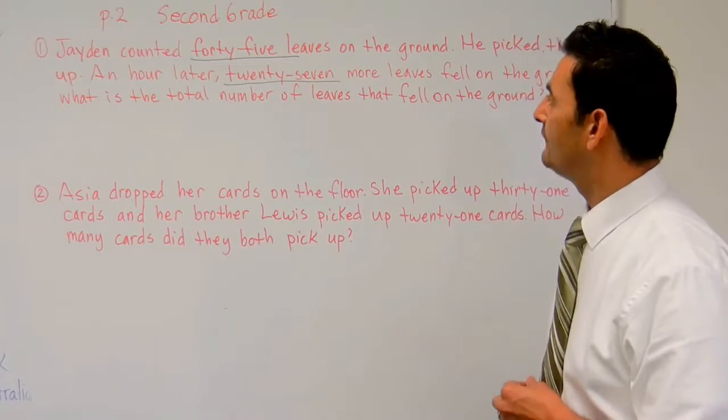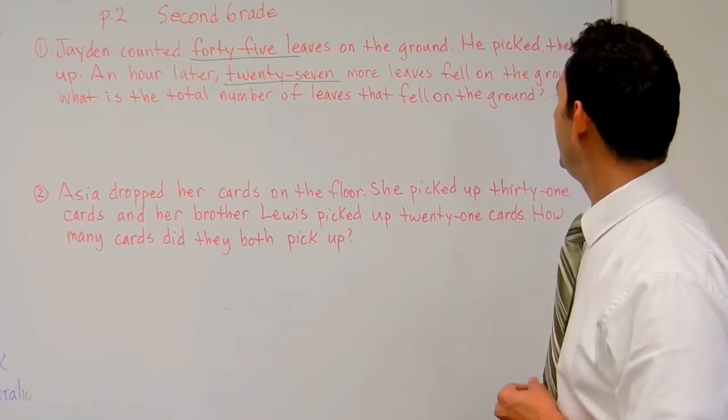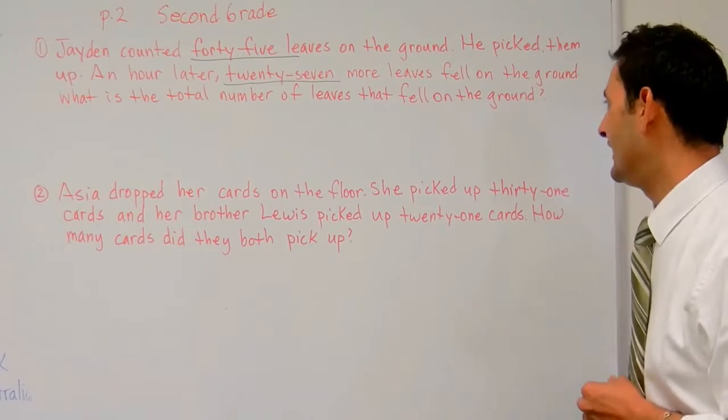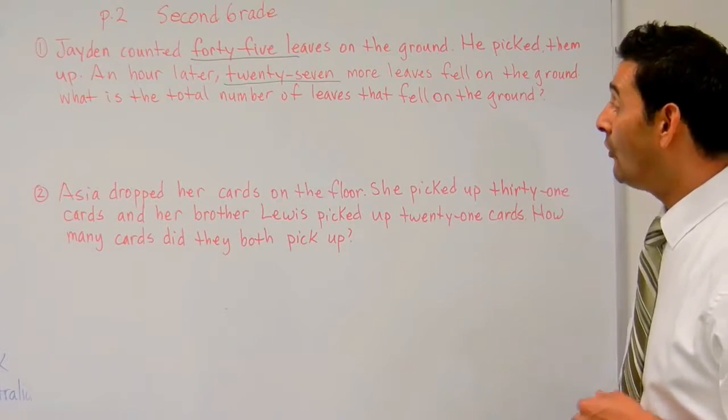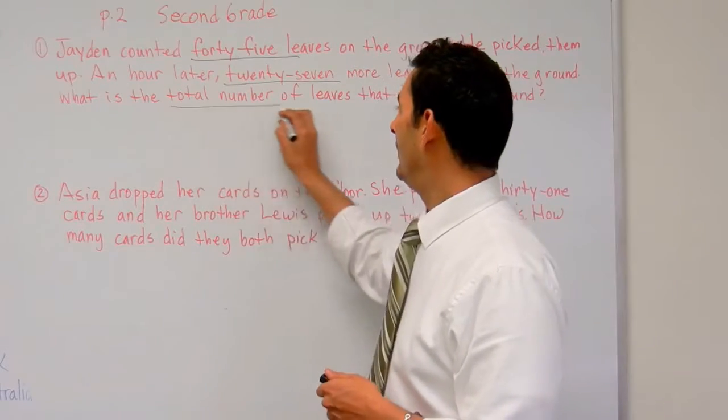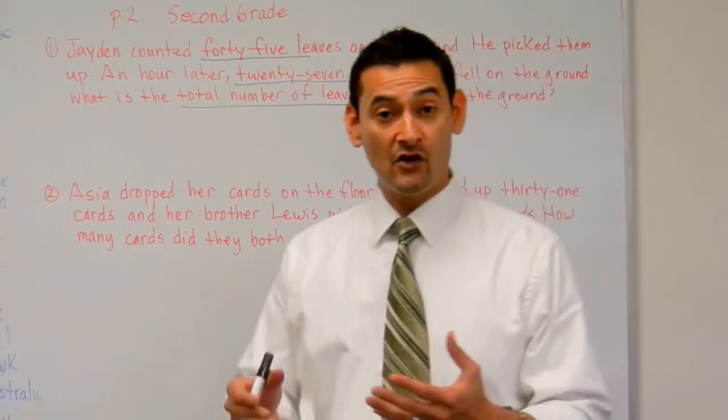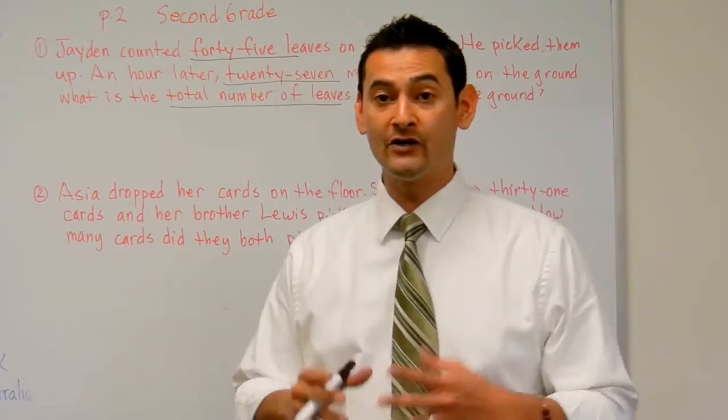So, it says, Jaden counted 45 leaves on the ground. He picked them up. An hour later, 27 more leaves fell on the ground. What is the total number of leaves that fell on the ground? So, we want to find out the total. So, when we're finding out the total, we're going to add, okay?